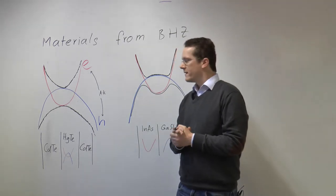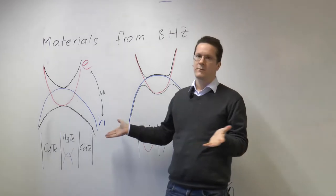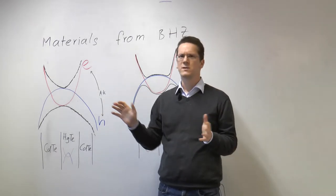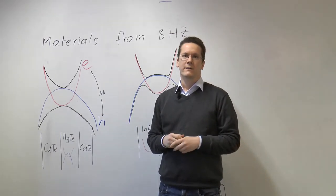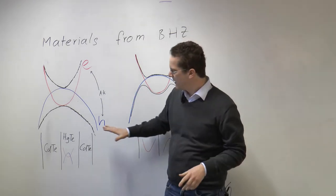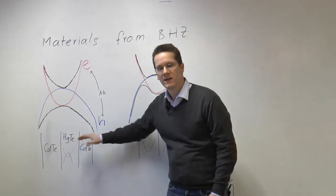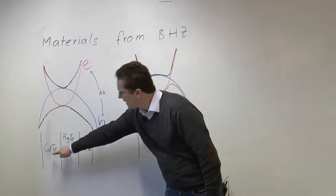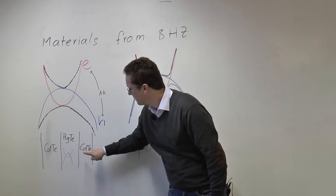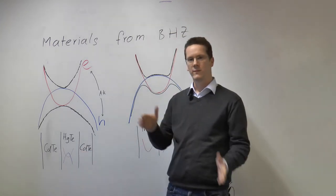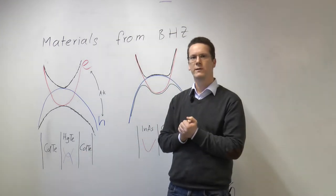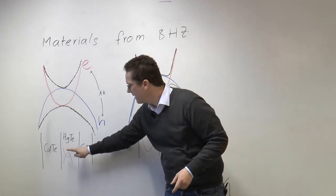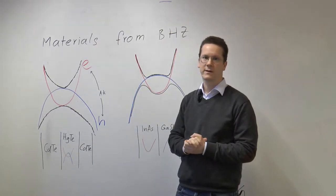Now it turns out that there are some complications because this mercury telluride has some other bands which spoil the gap. So one way to get rid of these additional bands is instead of having just mercury telluride, you actually make a stack, a heterostructure, out of cadmium telluride, mercury telluride and cadmium telluride again. And with this confinement you get rid of all unwanted bands and you're just left with the electrons and holes which form the topological band structure.